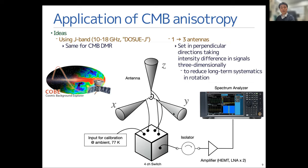If we set three antennas perpendicularly with one another, then taking a difference to reduce the long-term systematics in the rotation of the earth itself.